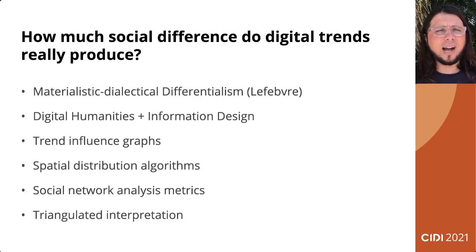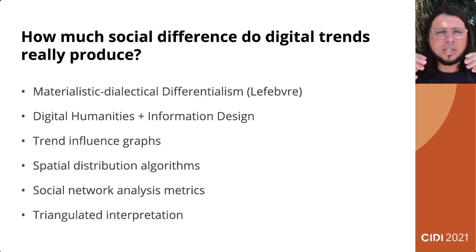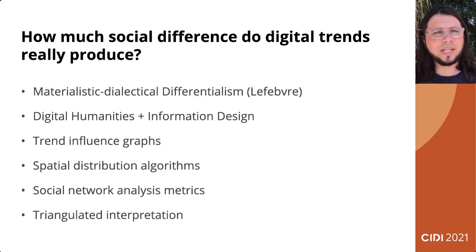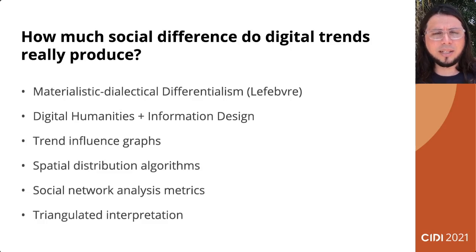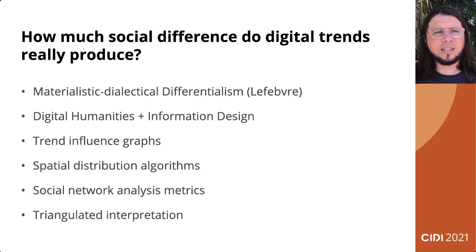This theory can explain how social differentiation happens in larger data sets. We take a digital humanities approach together with information design, combining these two fields to analyze trend influence graphs based on empirical work done by my students. We test different spatial distribution algorithms and social network analysis metrics to understand and interpret what they say about reality, always triangulating different sources of data and theoretical frameworks.